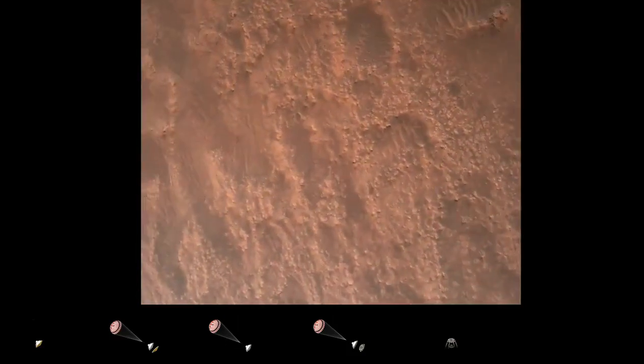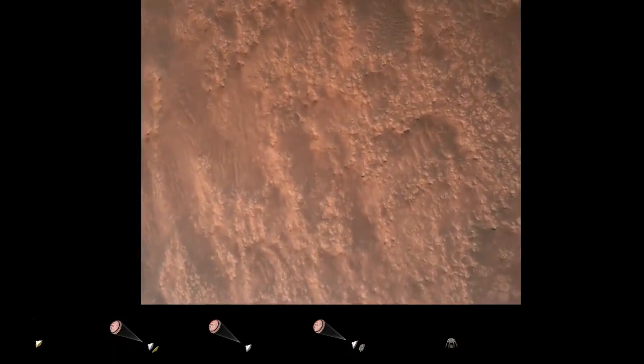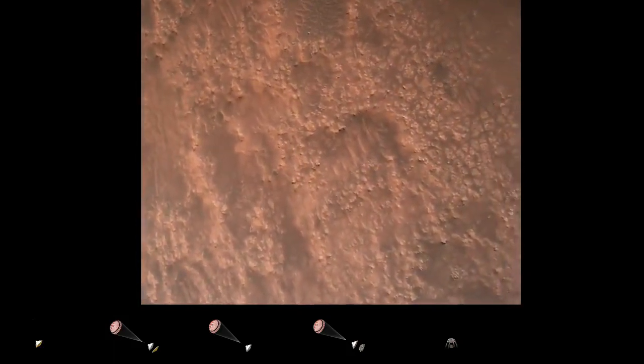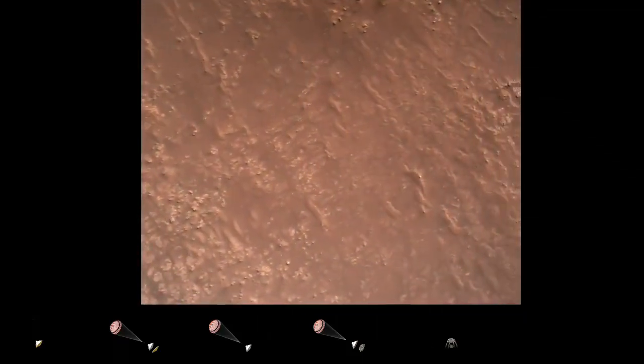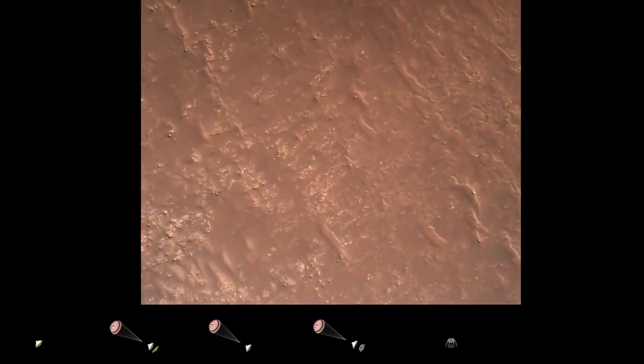TRN safety, bravo. We have completed our terrain relative navigation. Current speed is about 30 meters per second, altitude of about 300 meters off the surface of Mars.